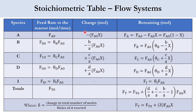We will now prepare the stoichiometry table for flow systems in the same way as before. First we define the species: A and B are reactants, C and D are products, and I is inert. We define the feed rates to the reactor: for A it is FA0, for B it is FB0, for C and D it is FC0 and FD0 respectively, and for inert it is FI0.